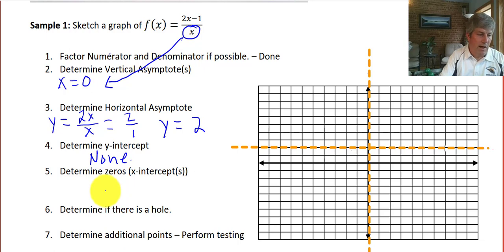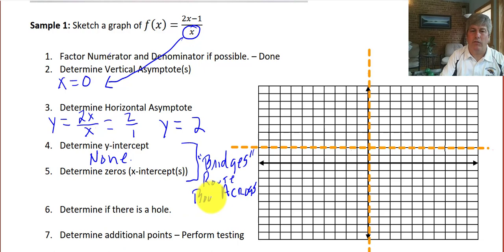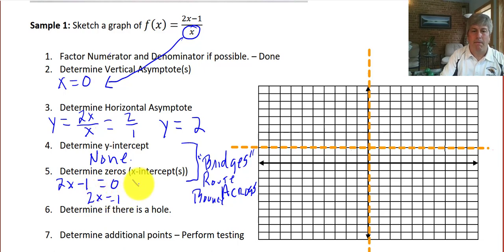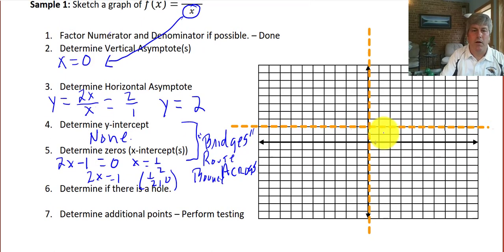Determine any zeros, i.e., the x-intercept. You'll hear me talk about the y-intercept and the x-intercept as bridges — routes across those axes. Sometimes we'll have double roots where we'll bounce, but most of the time they're going to be bridges across the x and y-axis, although we could have ones that bounce on occasion. So we work with our numerator: when is our output going to be zero? 2x - 1 = 0, so 2x = 1, giving x = 1/2. So we have an x-intercept at 1/2, and I can plot that. There are no holes in this one, so that does not apply.